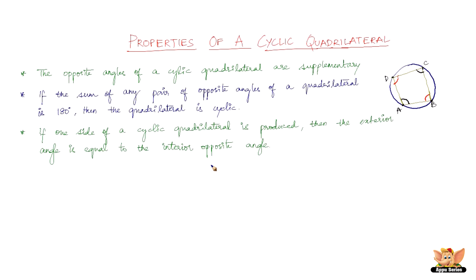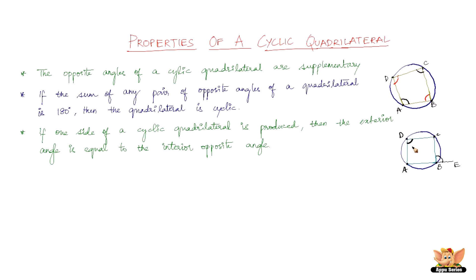The third property states that if one side of a cyclic quadrilateral is produced, then the exterior angle is equal to the interior opposite angle. So here we have cyclic quadrilateral ABCD. If we produce the side AB, the exterior angle — let us name this point E — so the exterior angle CBE is equal to the interior opposite angle. Therefore, angle CBE is equal to angle ADE, or the exterior angle B equals the interior angle D.